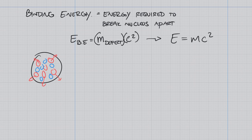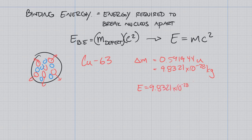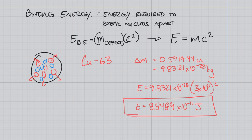For copper-63, the mass defect is 0.591944 U, or 9.8321 times 10 to the negative 28 kilograms. Plugging that in, the energy equals 9.8321 times 10 to the negative 28 times the speed of light squared (3 times 10 to the 8th), giving 8.8489 times 10 to the negative 11 joules. That's how much energy is required to hold together one copper-63 atom.